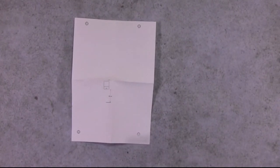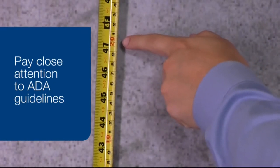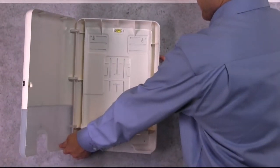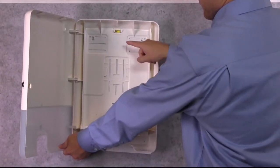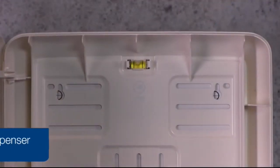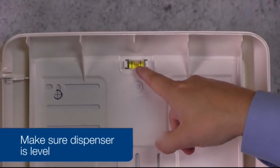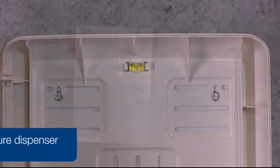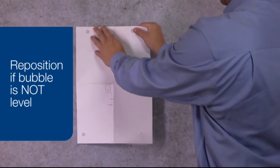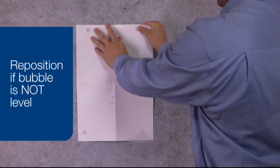Mark the wall using the installation template, paying special attention to the ADA height guidelines noted on the template. Hold your dispenser up to the template and ensure that it's level. You'll notice the dispenser has a bubble level inside to aid in accurate installation. This will help ensure proper dispensing. If needed, adjust your template until it's level.